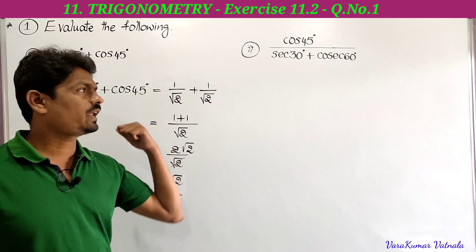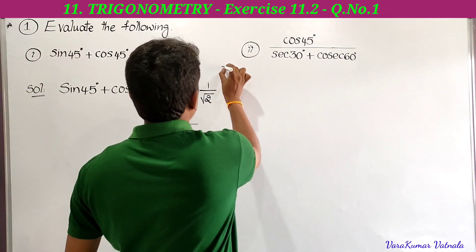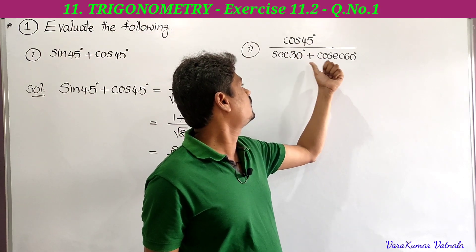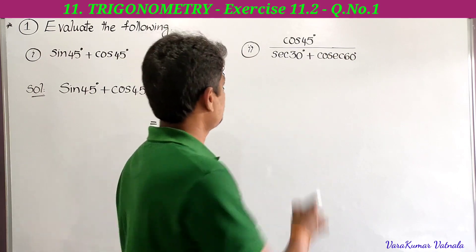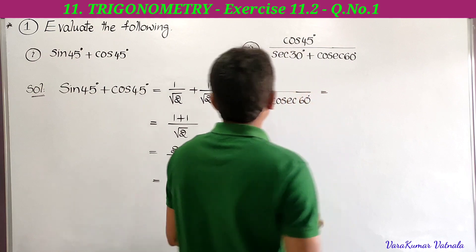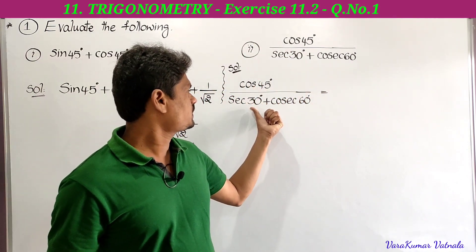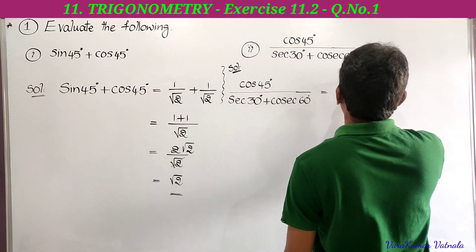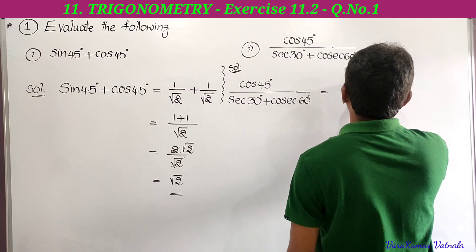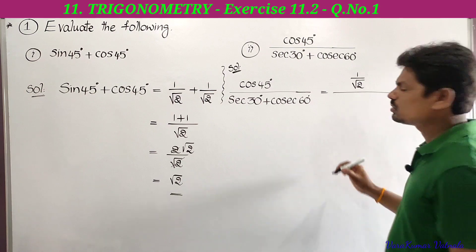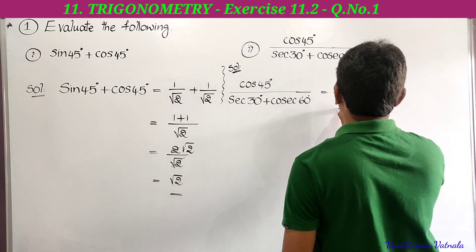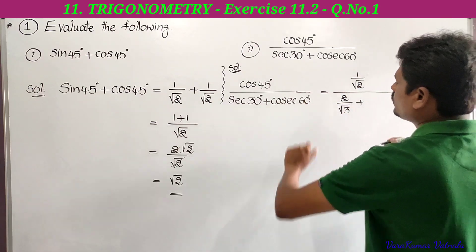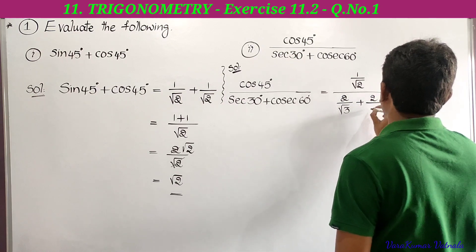The second bit: find the value of cos 45 degrees divided by sec 30 degrees plus cosec 60 degrees. Substituting values: cos 45 is 1 by root 2, sec 30 is 2 by root 3, and cosec 60 is also 2 by root 3 — sec 30 and cosec 60 are both equal to 2 by root 3.